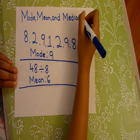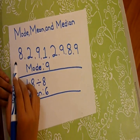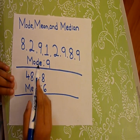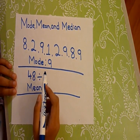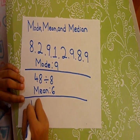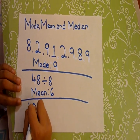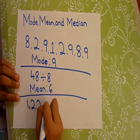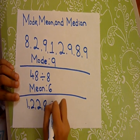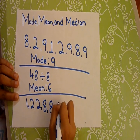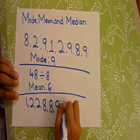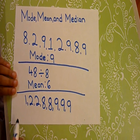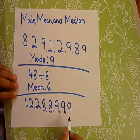Last we're going to do the median. So if this is our set of data, first thing we have to do is put it in order from least to greatest. I'm going to do that now. As you can see, I've put it in order from least to greatest.